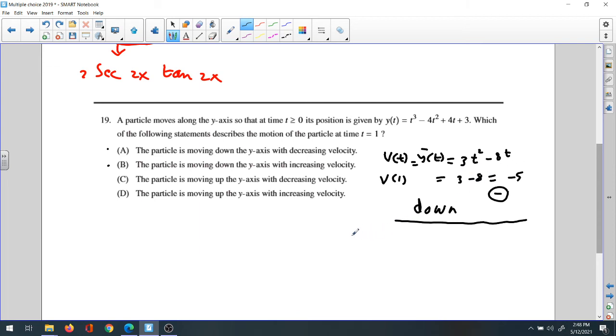Finding the derivative, drop the 2 in the front to get 6t minus 8. Now we evaluate the acceleration at time t = 1: a(1) = 6(1) - 8 = -2. Since it's negative, the velocity is decreasing.